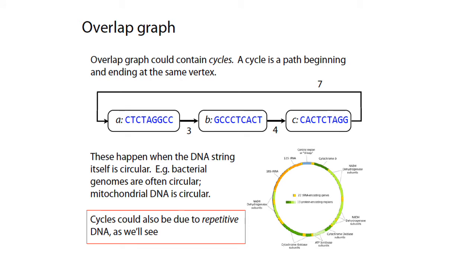The point of the overlap graph is that the structure of the graph tells you something about potentially the structure of the genome the reads came from. In this hypothetical example, you have three reads — A, B, and C — with edges from node A to B and from node B to C. But importantly, for this particular graph, you also see an edge from node C to node A, because the last seven bases of read C are exactly the same as the first seven bases of read A.